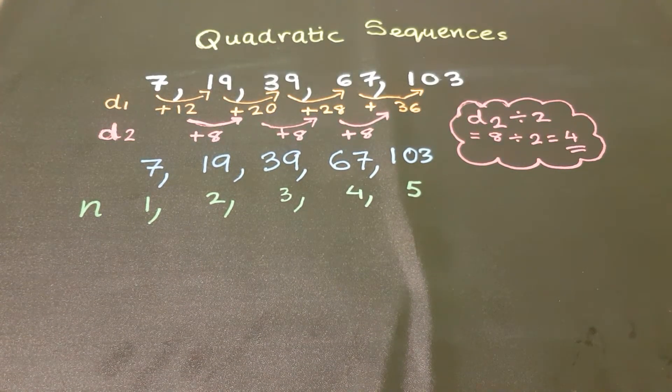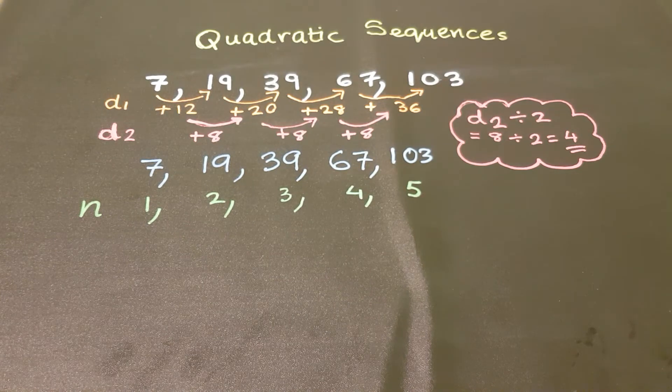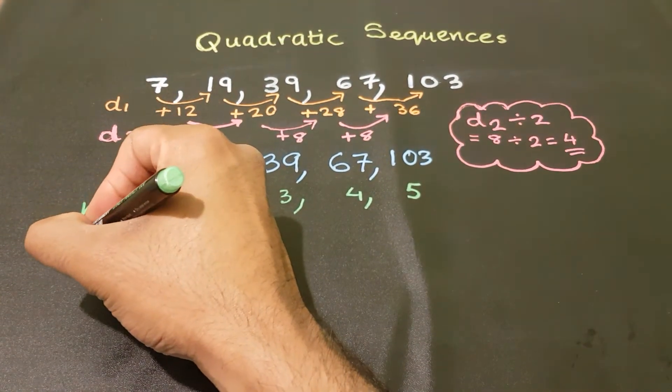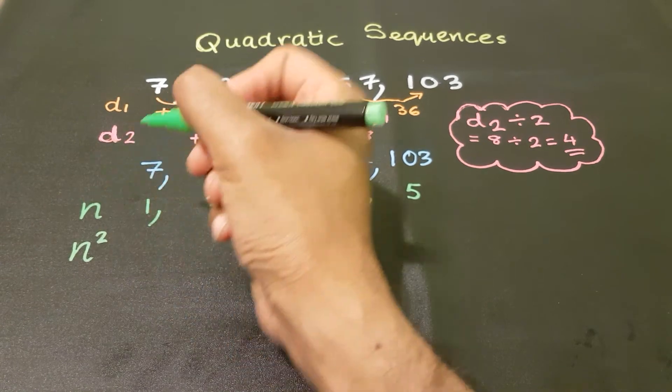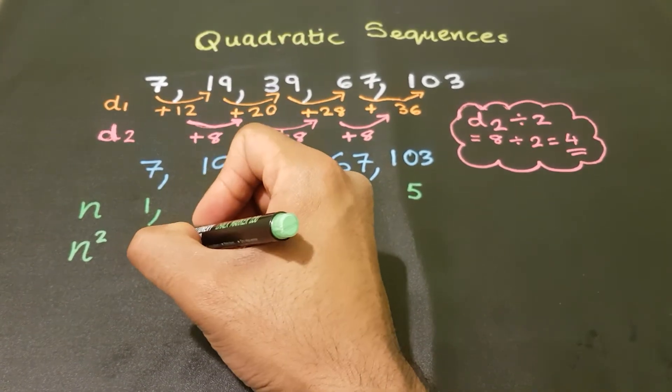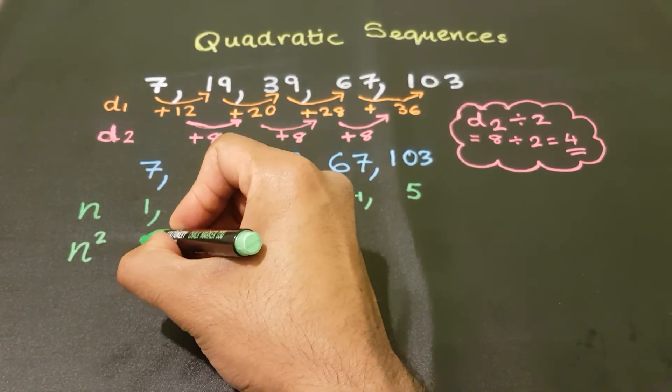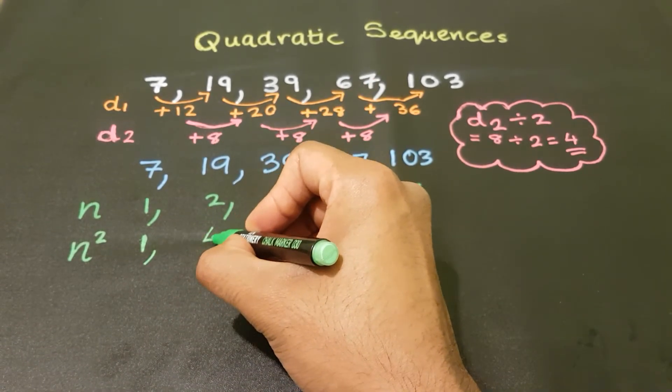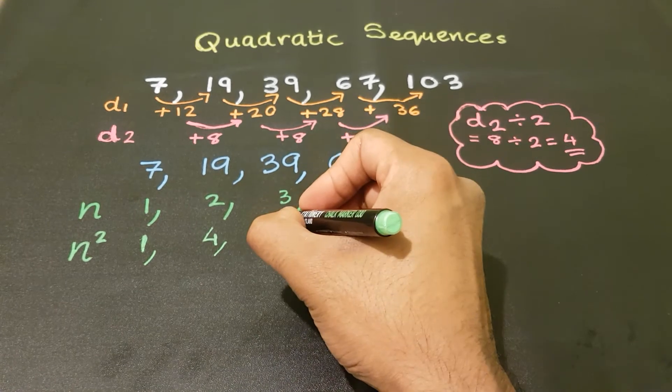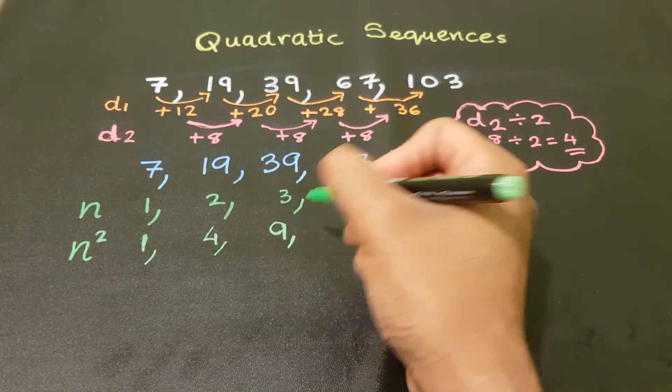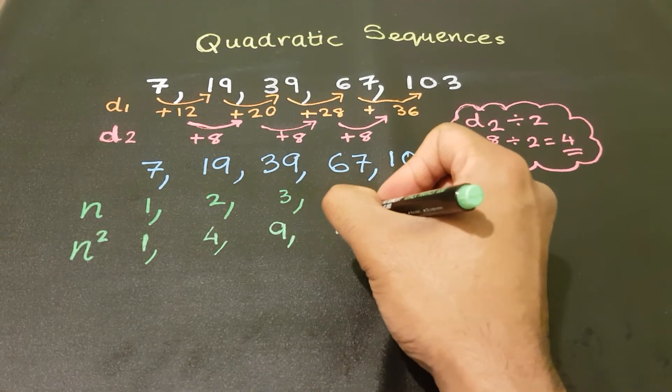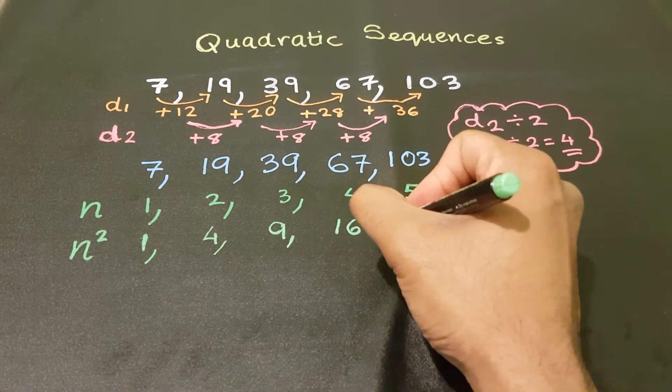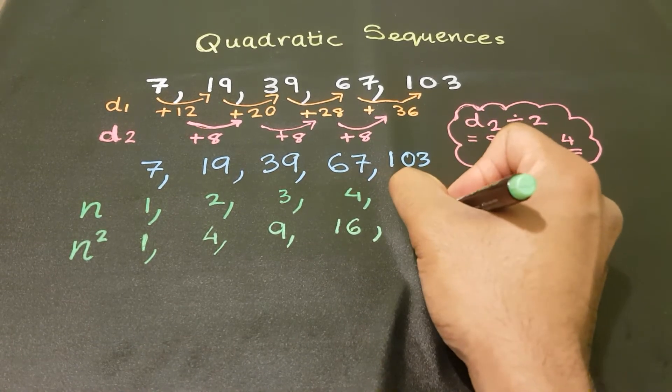And since we are dealing with a quadratic sequence, what I am going to do is I'm going to square the term numbers. So 1 squared is 1, which is 1 times 1. 2 squared is 2 times 2, which is 4. 3 squared is 3 times 3, which is 9. 4 squared is 4 times 4, which is 16. And 5 squared is 5 times 5, which is 25.